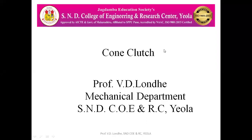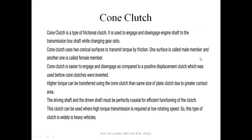Today we are going to see the cone clutch. The cone clutch is one type of friction clutch which is used to engage and disengage the engine shaft with the transmission shaft. It basically consists of two conical surfaces so as to transmit the torque by friction.